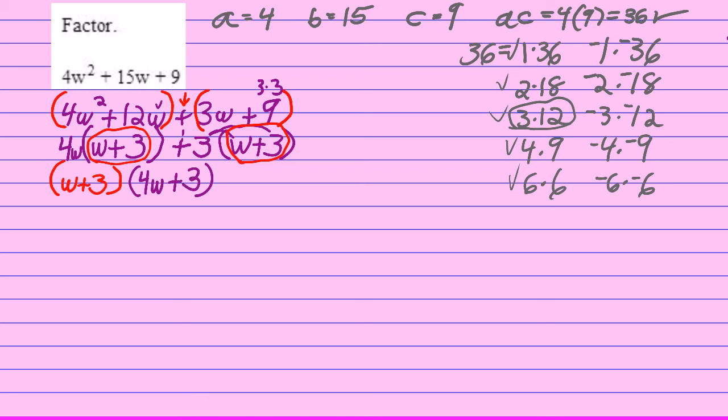Now how do I know I'm right? Well, I don't. I'm going to check my answer now, and I'm even going to write 'check' just so that you know what I'm doing. I'm going to take w + 3 and 4w + 3 and multiply them together by foiling. F-O-I-L, remember that, equals first, outside, inside, and last. So the first two terms are w and 4w. When I multiply them together, I get 4w².